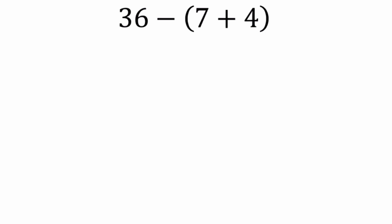So what do I mean? Well, first let's just talk about this logically. We have 36 and this means that we're subtracting both 7 and 4, right? We're subtracting both of these numbers.